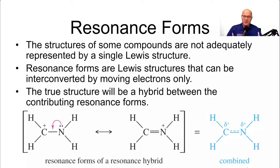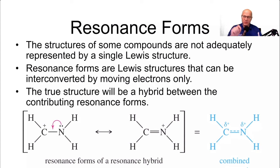The structure of some compounds is not adequately represented by a single Lewis structure. Resonance forms are Lewis structures that can be interconverted by moving electrons only — you do not ever move atoms. You only move electrons. The true structure will be a hybrid between the contributing resonance structures.